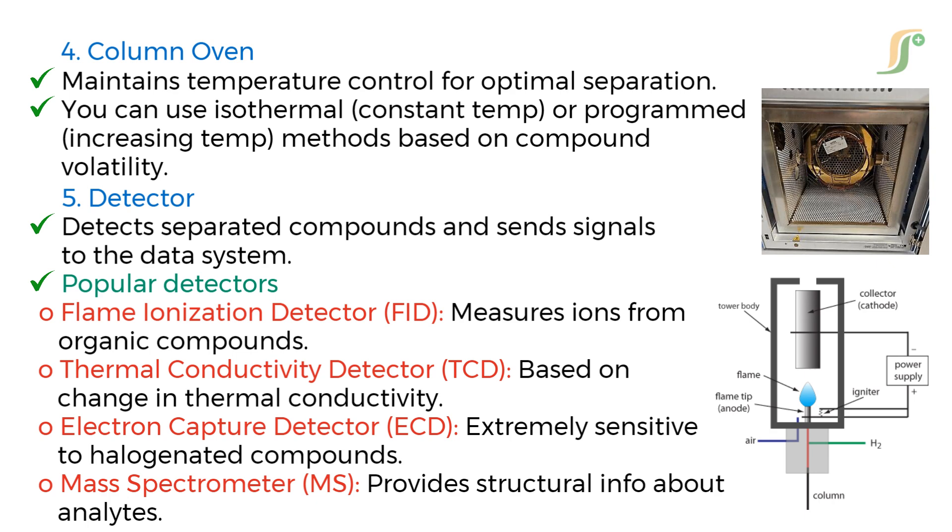Fifth component is detector. It detects separated compounds and sends signals to the data system. Popular detectors are flame ionization detector, that is FID, which measures ions from organic compounds. Thermal conductivity detector, that is TCD, is based on changes in thermal conductivity.